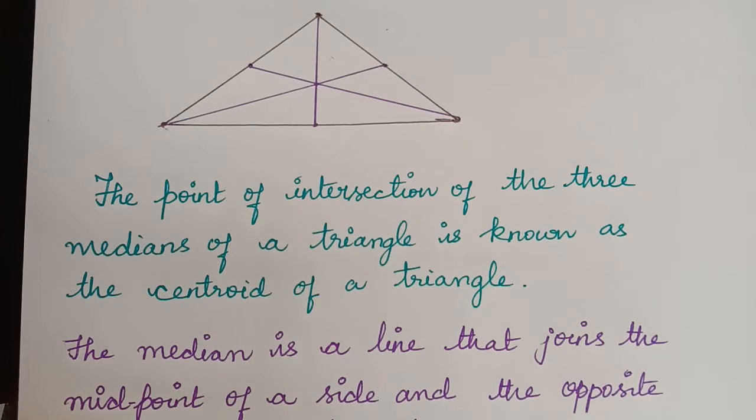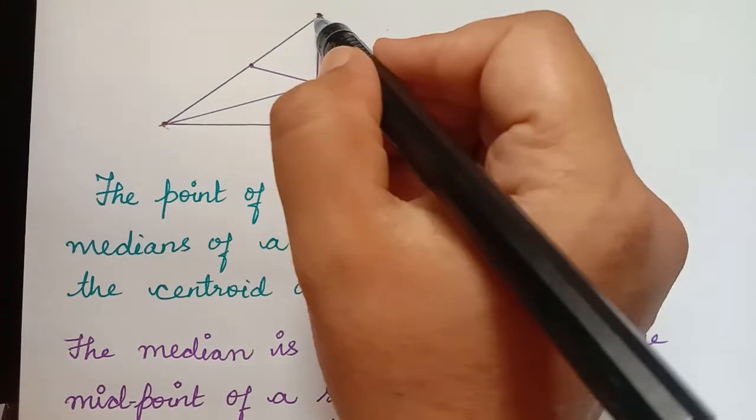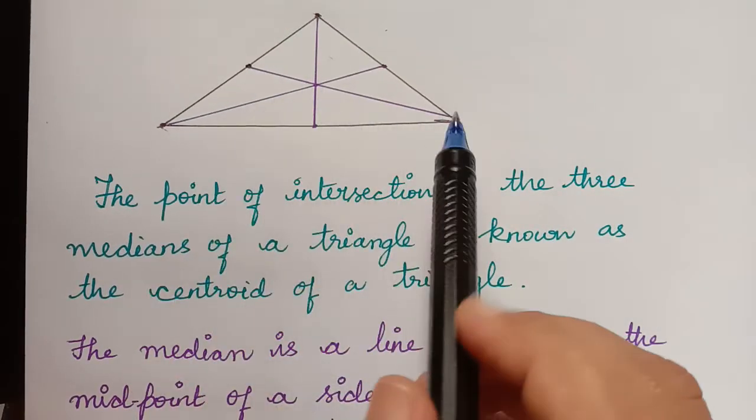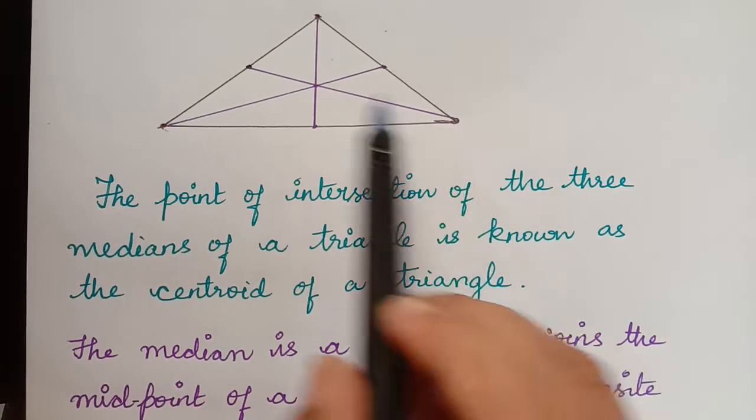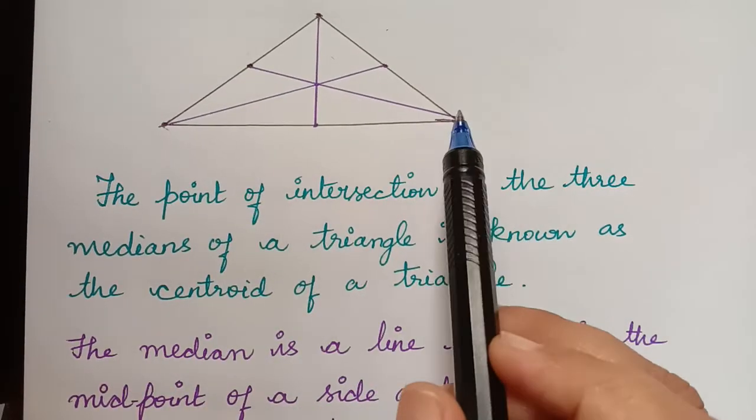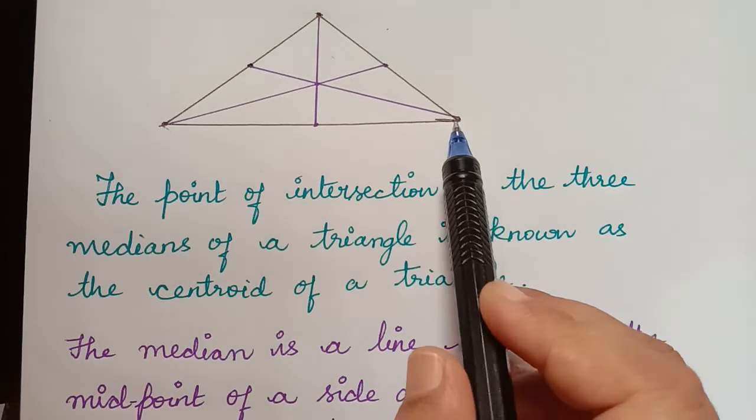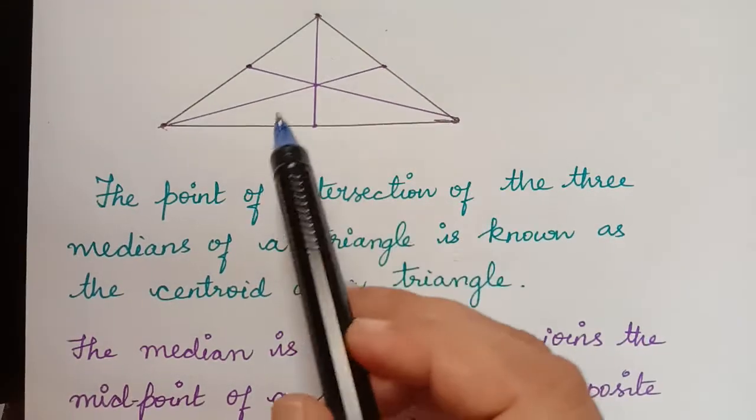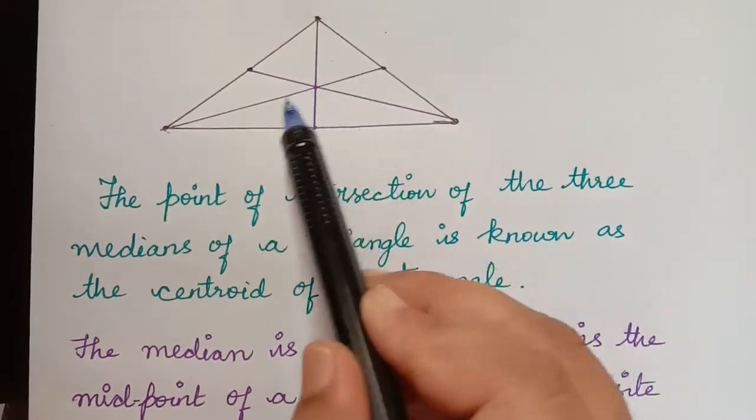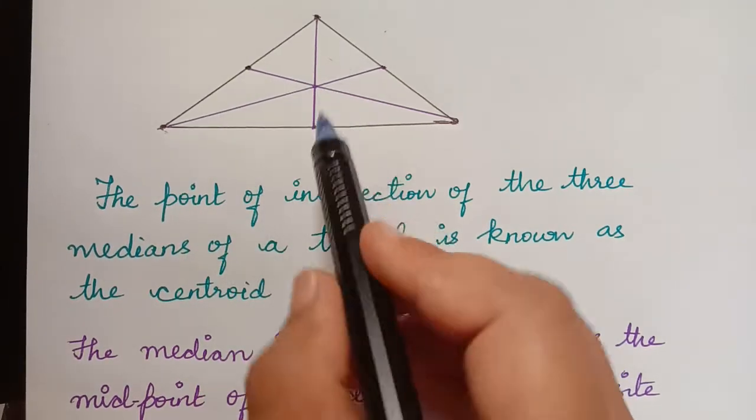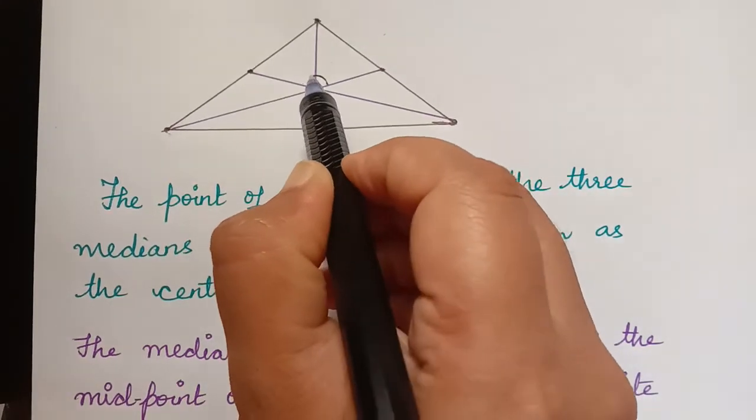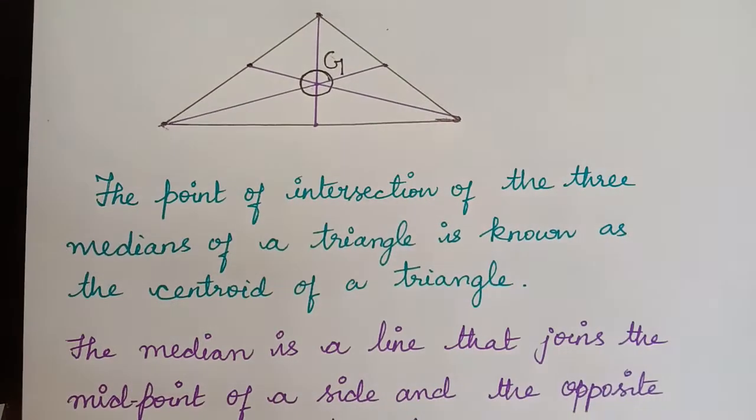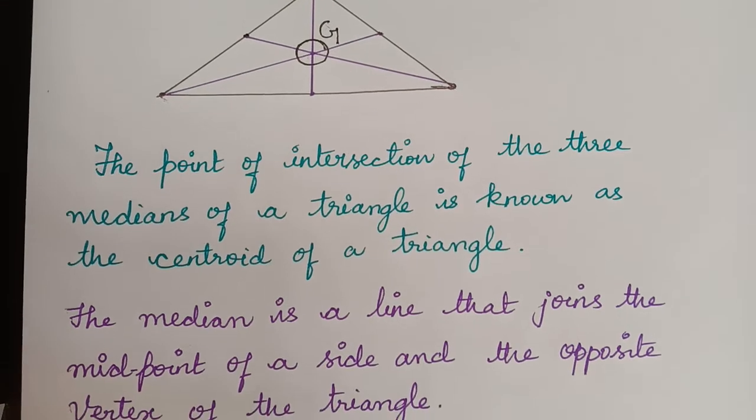Now for example in this triangle, for this side this is the midpoint and this midpoint is joined to the opposite vertex. So now this line is a median of this triangle. Similarly we have three medians for this triangle and the intersection of these three medians, that intersecting point is known as the centroid of the triangle and it is represented as capital G.